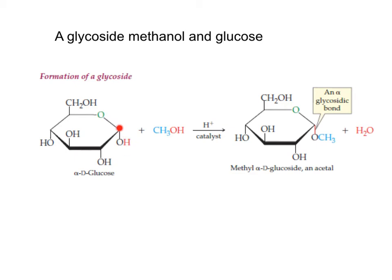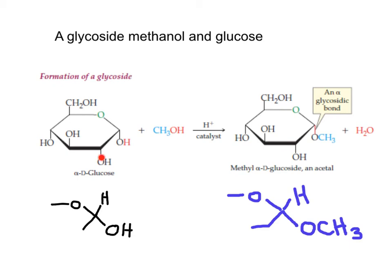The alpha-anomer of glucose can react with an alcohol molecule. This is a hemiacetal because it has an OH and an OR, and upon reaction with one molecule of alcohol it can produce a glycoside. This is now an acetal that has a glycosidic bond. Upon reaction with a molecule of methanol, we get an acetal in which we have an OR and a second OR. In the reaction, one molecule of water is lost.